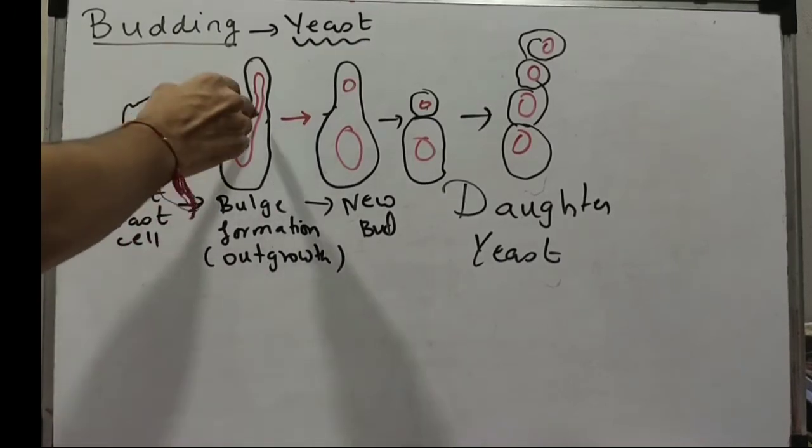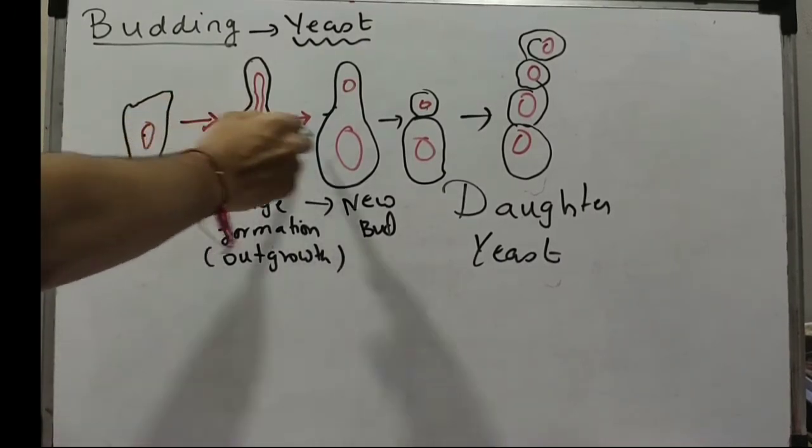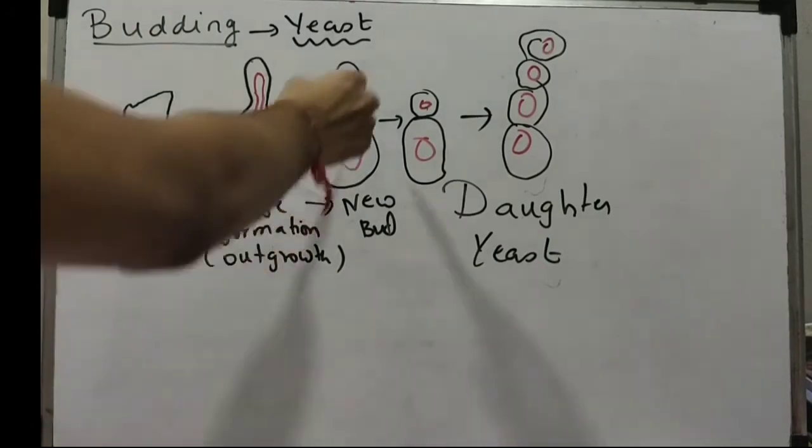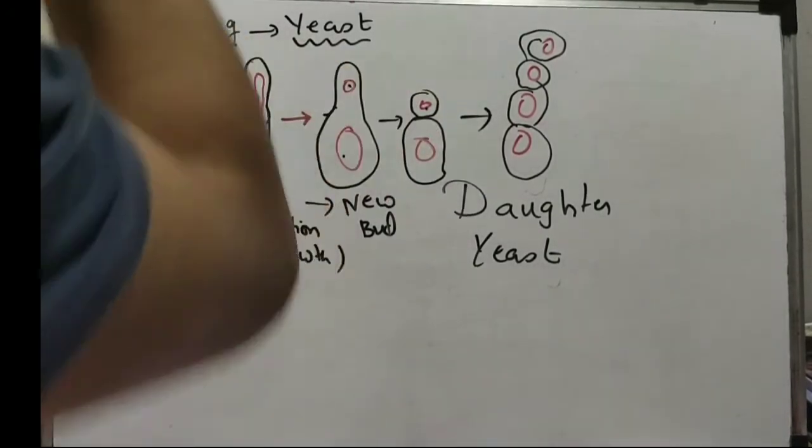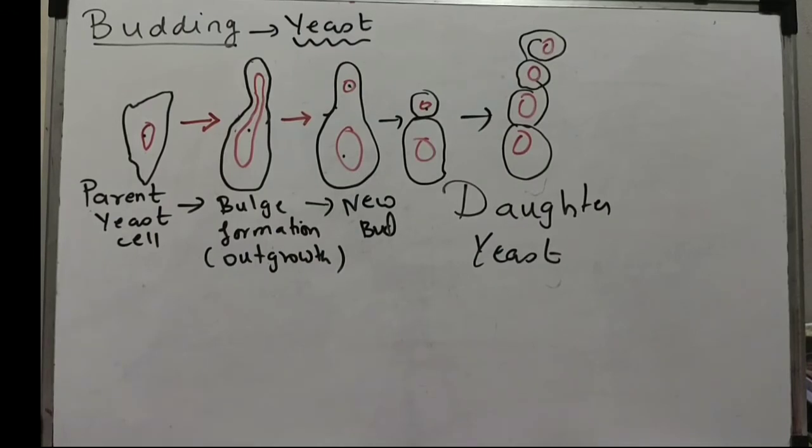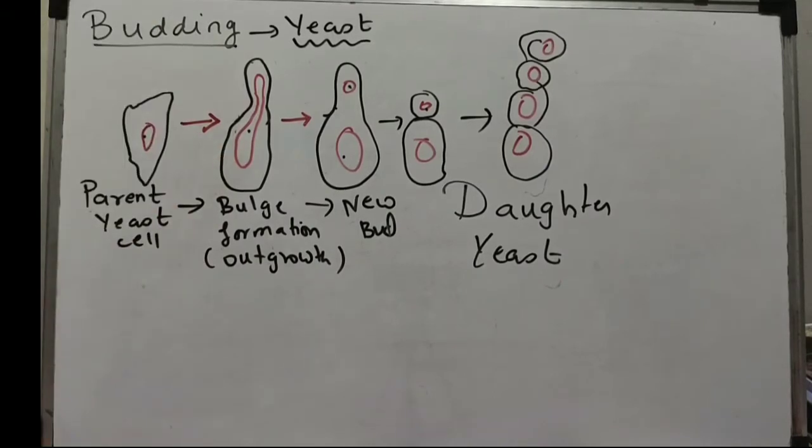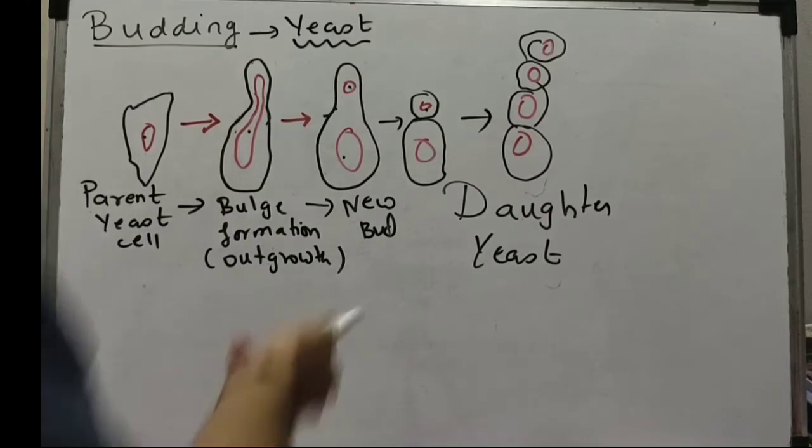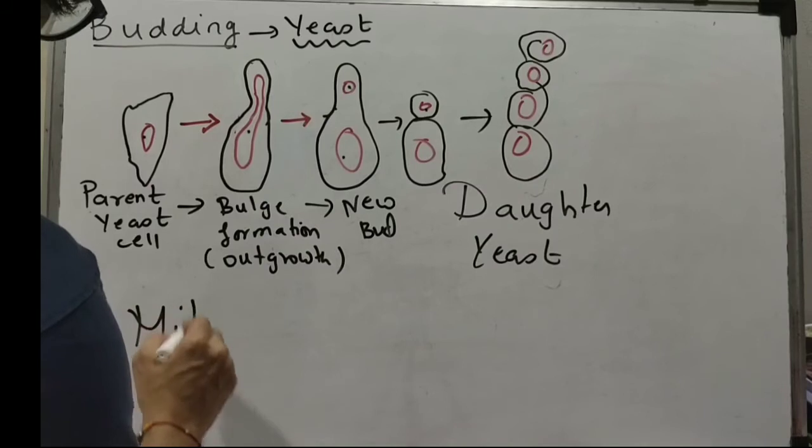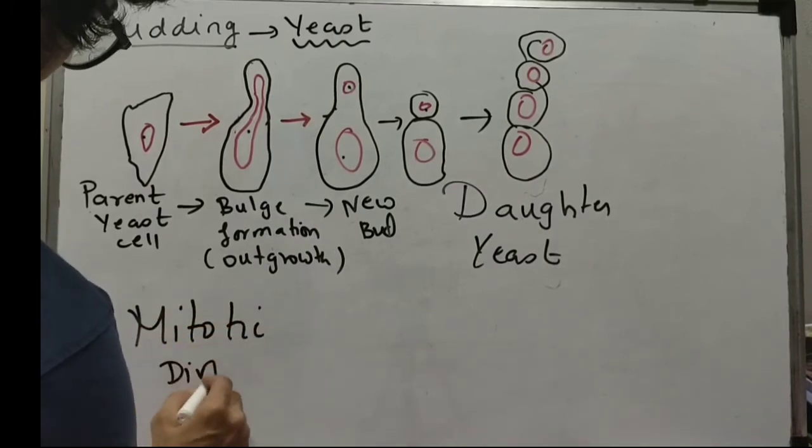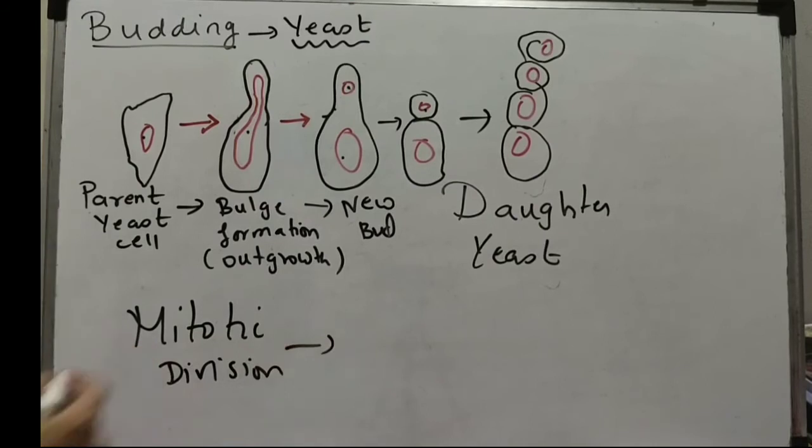Alag-alag ho karke maabab se judha ho gaye. The process of division hota hai and why does it happen?